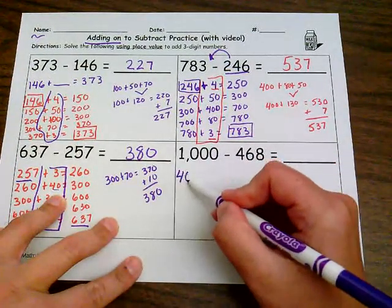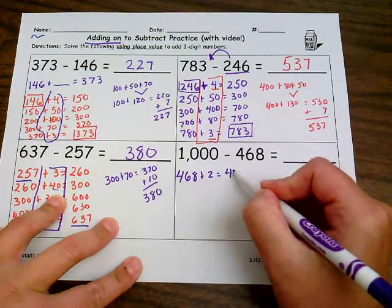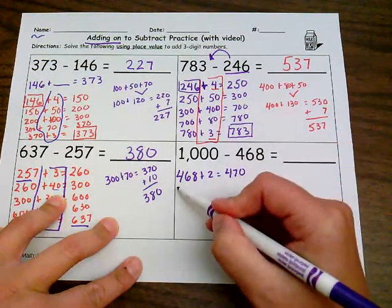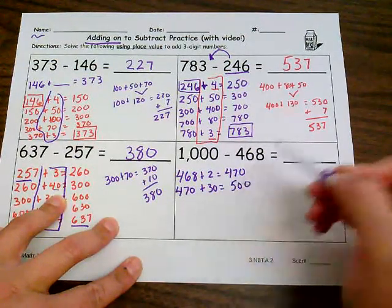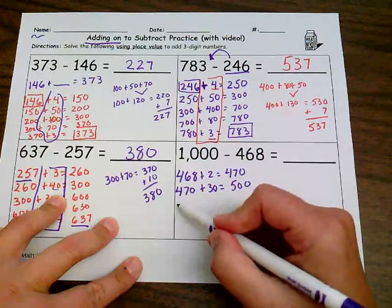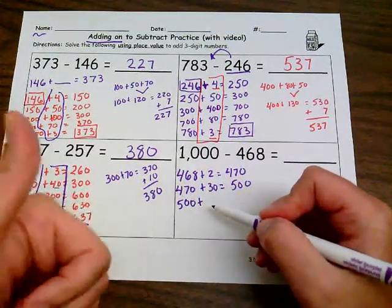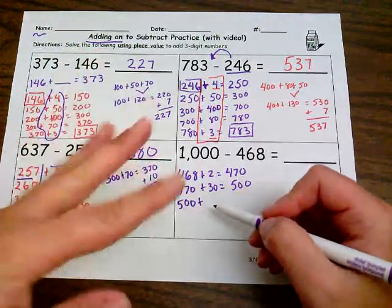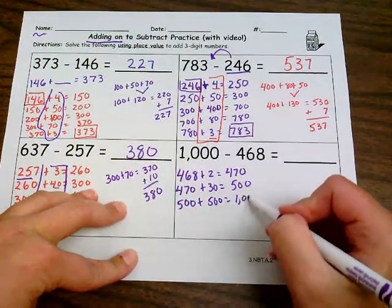So pause the video, see how far you can get and then press play to check your work with me. Alright. So we're going to start at 468. I'm going to add two to get me to 470. Now I'm going to add on some tens to get me to my hundred. And now that I'm at 500, I just need 500 more to get to my thousand. That was actually a lot less steps.